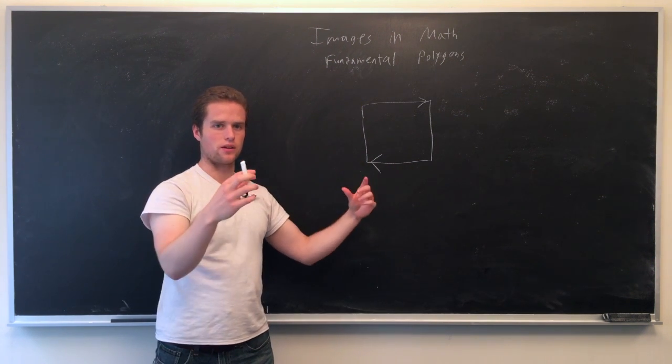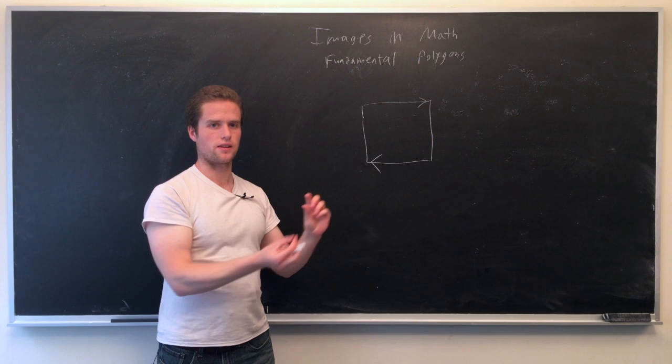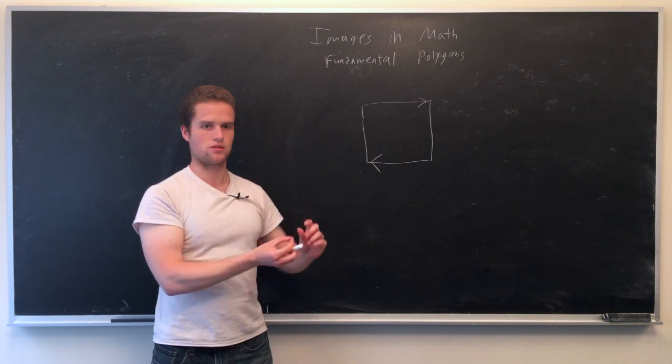Essentially what we're doing here, if we have a long sheet, we take one side, we twist it and connect it to the other side, and that gives us a Möbius strip.